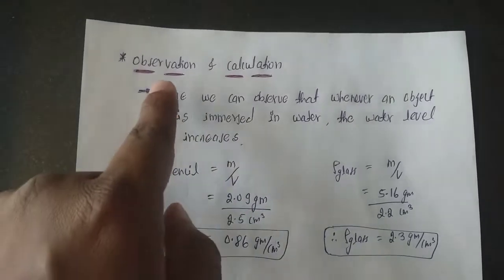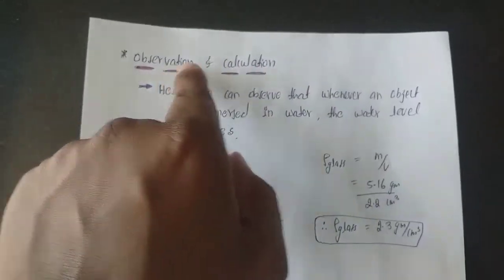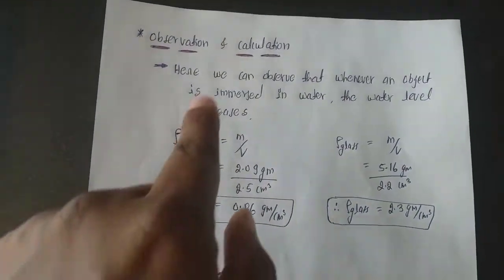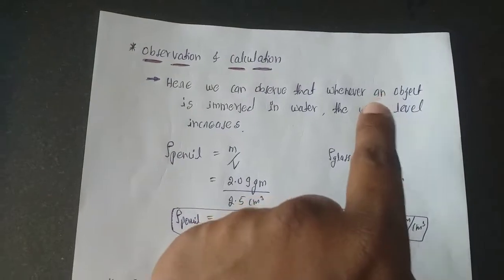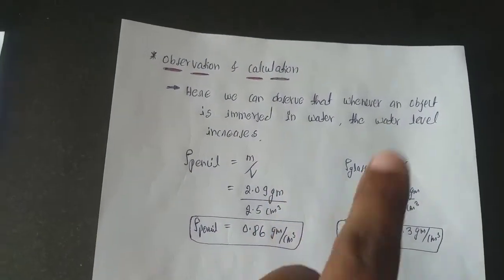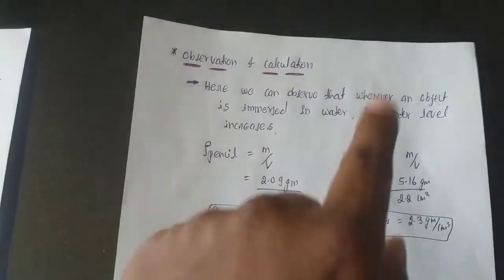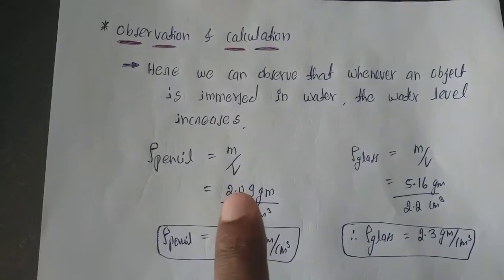After writing the procedure, you should mention the observation and calculation. Here, what we observe: when the object is immersed in the water, the water level increase. That is what we noticed, that is observation. You mention the observation.